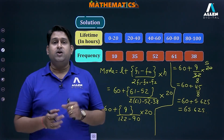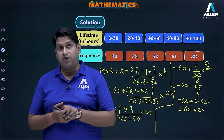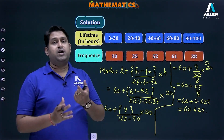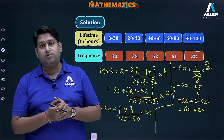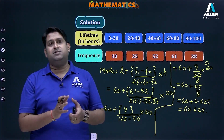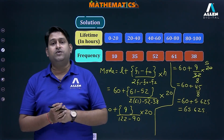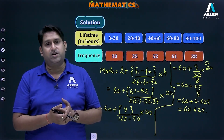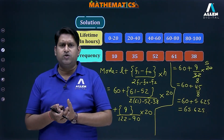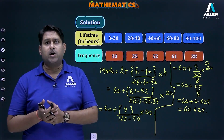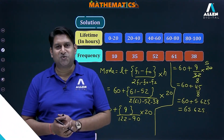So the mode of this given data is 65.625. Please be careful about the three terms f1, f0, and f2: f0 is the frequency of the class preceding the modal class, f1 is the frequency of the modal class, and f2 is the frequency of the class succeeding the modal class. l and h have their usual meanings. I hope the whole procedure is very clear to you. Thank you.